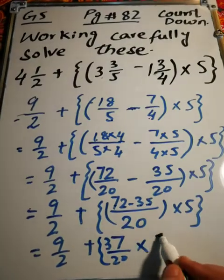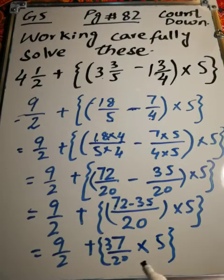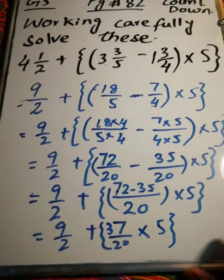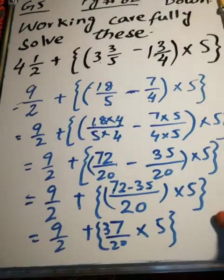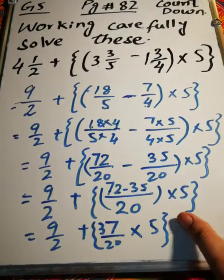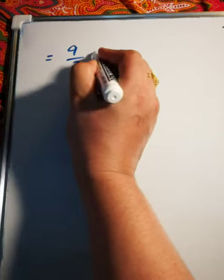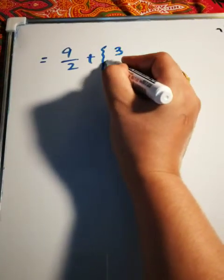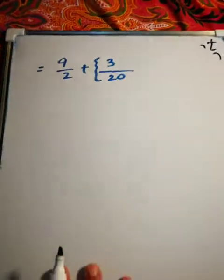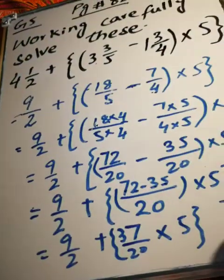There is no place, I will turn the side and I will write the same number on the other side. 9/2 plus. Okay, only this is right: 37 over 20, multiply 5.